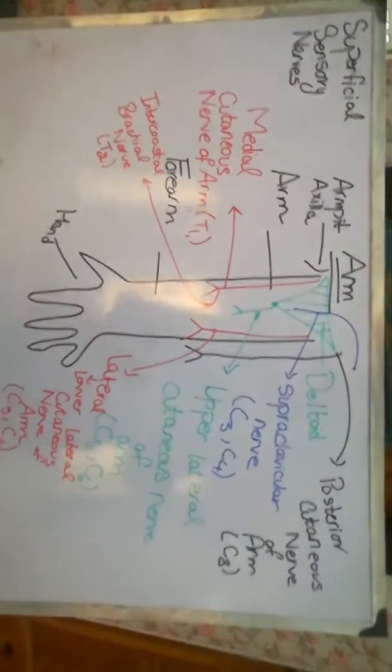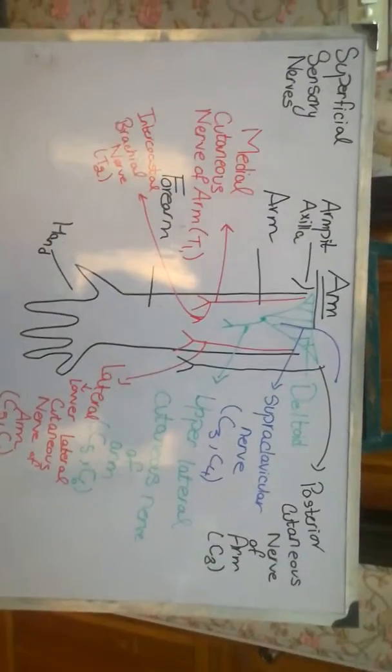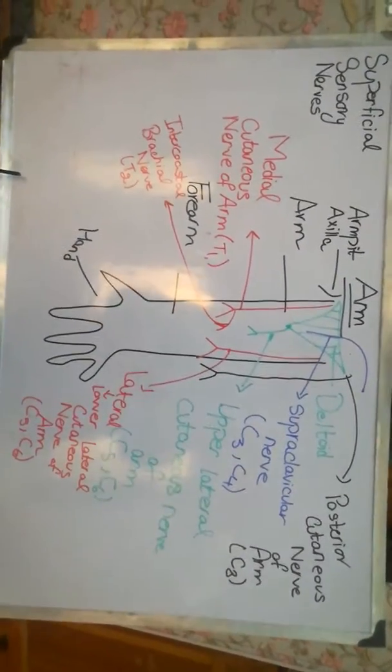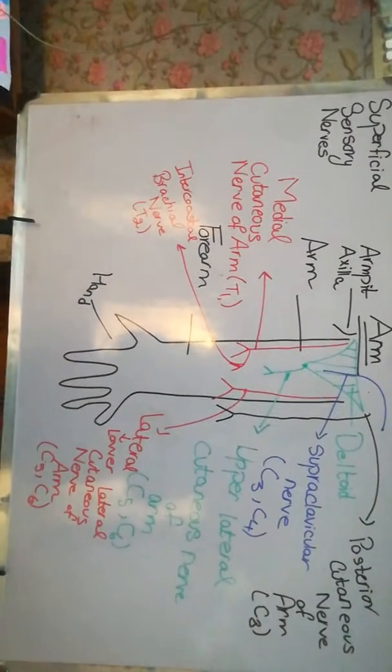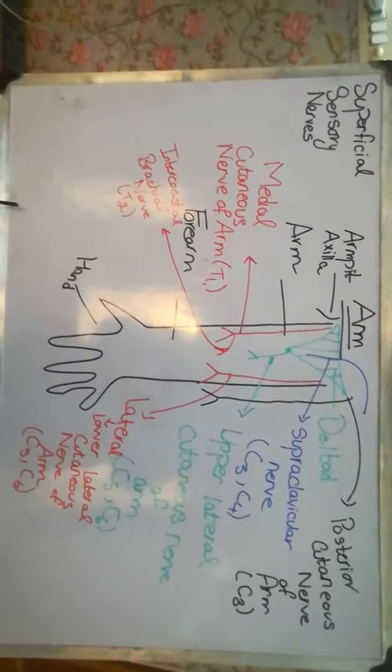Hi guys, today we're going to start with our first region of the upper limb, that is the arm. Right now the presentation I'm going to give you is basically about the superficial sensory nerves. What are the nerves and which nerves are coming and going to supply which part of the arm.